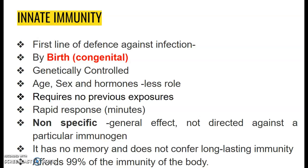That means it has a generalistic effect against a wide variety of organisms — it is not directed against a particular immunogen. It does not have any memory and does not confer a long-lasting immunity to a particular immunogen. This innate immunity accounts for about 99% of the total immunity of the body.